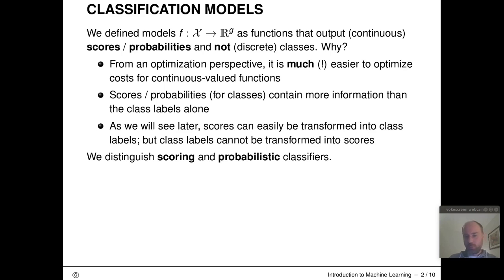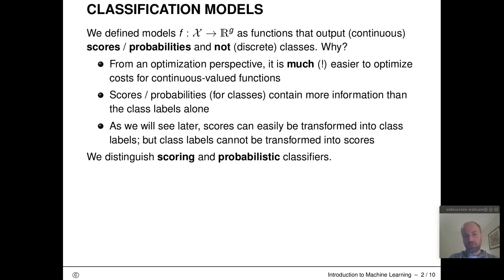Why are we doing this? From an application perspective, scores and probabilities are more convenient and useful. If I know the posterior probability of an object X coming from a certain class, that is more valuable than just knowing which class it is sorted into. For example, in a semi-automatic system assigning disease probabilities, it is much more valuable to say a person has the disease with 55% probability — a rather uncertain prediction we might even want to reject — than simply saying the person is sick with no information on confidence or uncertainty.